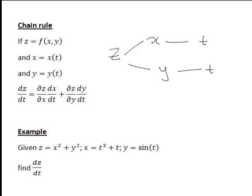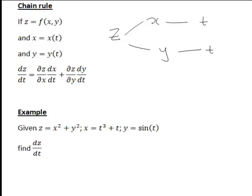Let's put this into practice with a specific example. In this case we're told that z is x² + y², so a function of x and y, and x equals t³ + t, and y equals sin(t). So x and y are both functions of a third variable t.